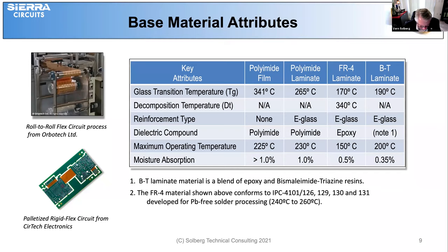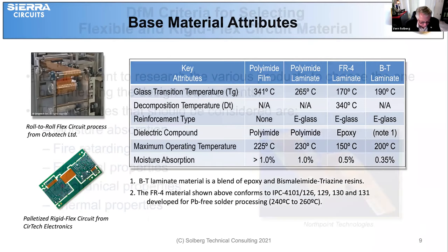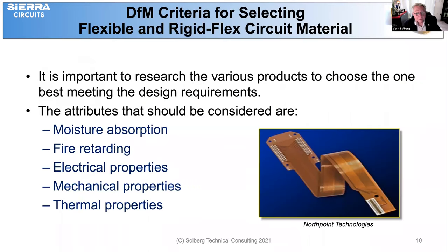The FR4 material noted in IPC 4101, specs 126, 29, 30, and 31 are developed for lead-free solder processing reaching temperatures above 240 degrees C. It's important to research the various products to choose the one best meeting the design requirements. Things to consider include moisture absorption, fire retardancy, electrical properties, mechanical properties, and thermal properties.